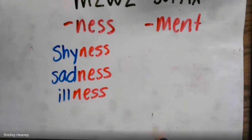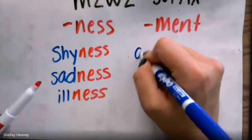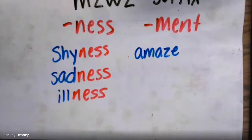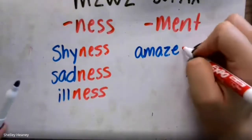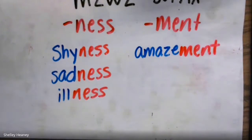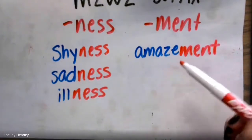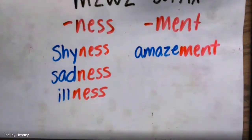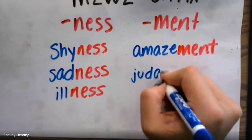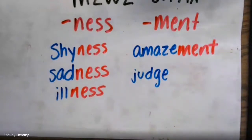Let's look at our suffix -ment, M-E-N-T. This kind of means that you are doing something or carrying out an action. For example, 'to amaze' means like you are shocked about something. If I add the suffix -ment, 'amazement' — you have a feeling of amazement, you are shocked by something.